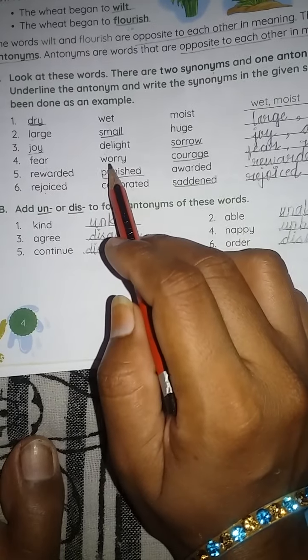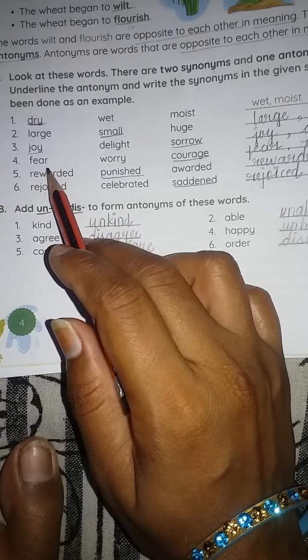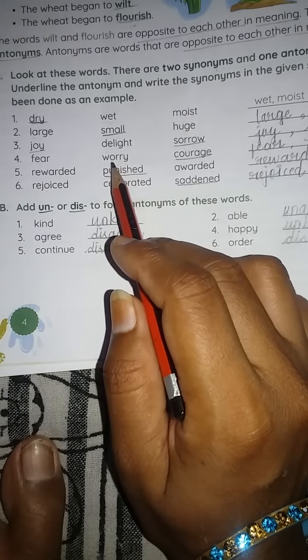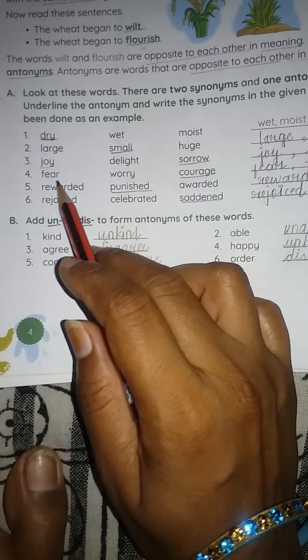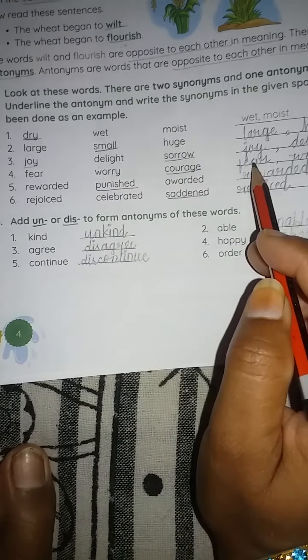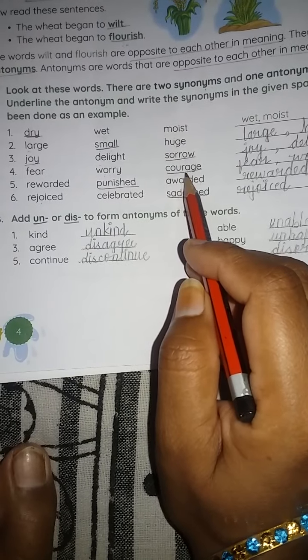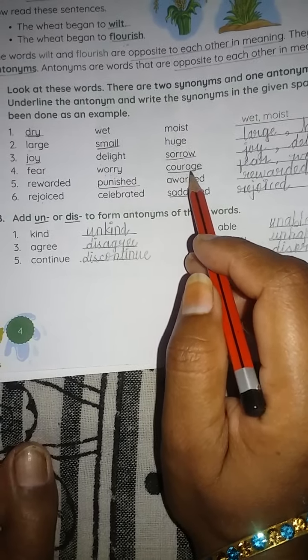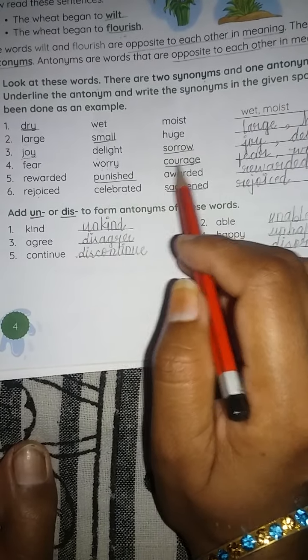Next, fourth is fear, worry, courage. Fear means hota hai dar, aapko dar lag raha hai kisi cheez ka. Worry means chinta hota hai, aur tab bhi aap darta ho kisi cheez ka, dar hota hai. So fear and worry, they have the same meaning. So these two are synonyms and we write these two here. And courage means sahas. Jab mandi mein sahas hai to wo darega nahi. So obviously courage is the opposite of these two. So this is antonym, so we underline it.